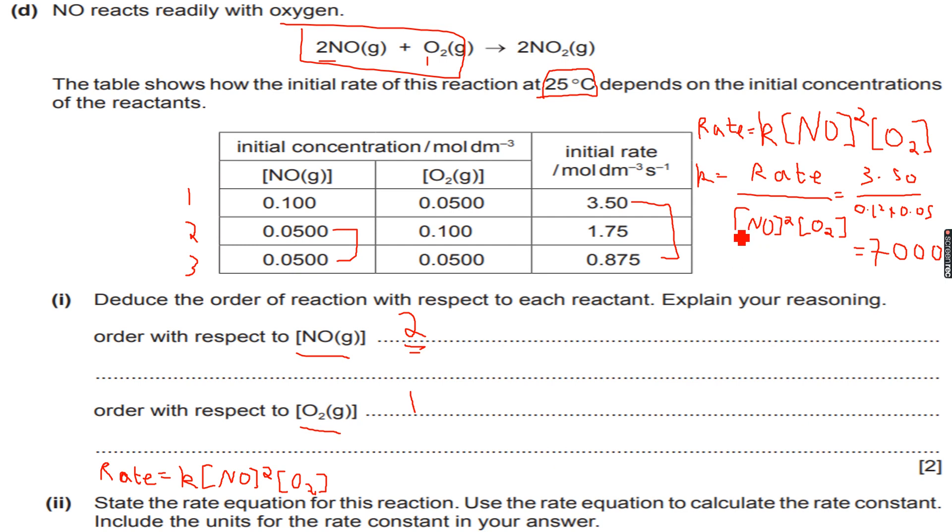Now let's figure out the units. Now the rate, the unit of the rate is mole per dm cubed per second. And the units of concentration are mole per dm cubed. But in total we have to cube it because there are 2 square because of NO and then O2 has the same units.